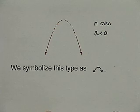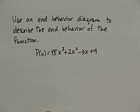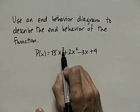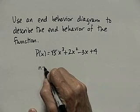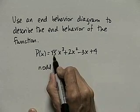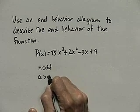Let's use these statements for an example. Use an end behavior diagram to describe the end behavior of the function p equals square root of 5 times x cubed plus 2x squared minus 3x plus 4. This is an odd degree polynomial, n is odd, and the leading coefficient, square root of 5, is positive. So the end behavior diagram is going to look like this.